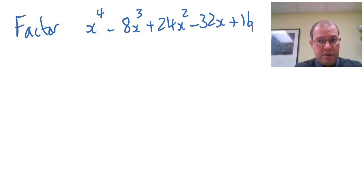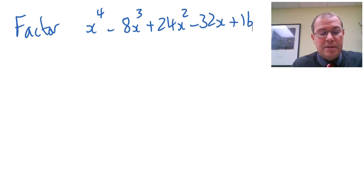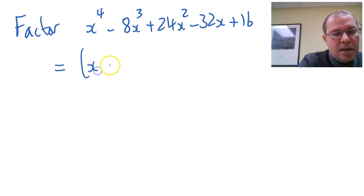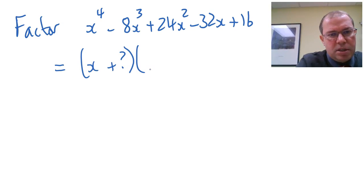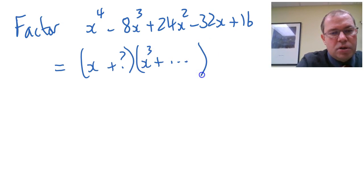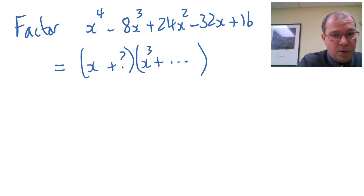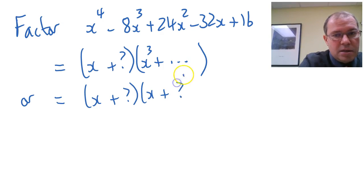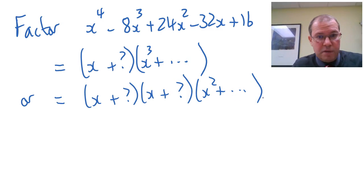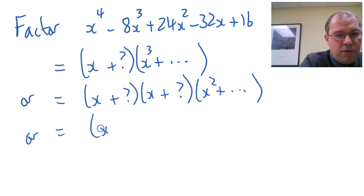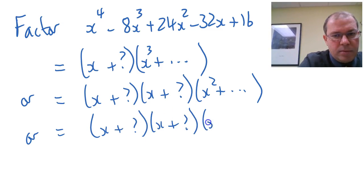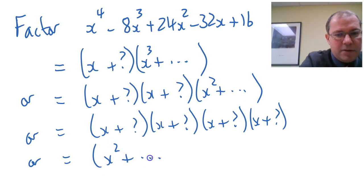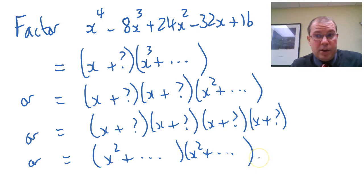So here we've got a degree 4 polynomial, and the first thing to consider is what are the possible factors. If this did factor, what could it factor to? Here are some possibilities: it could have one linear factor, so x plus something, and then the quotient would be a cubic of some sort. It could have a linear factor and a cubic that does not factor, or it could have two linear factors, with that resulting in a quadratic that does not factor. Or it could have four linear factors. Or the final possibility is it could factor into two quadratics, and the quadratics don't factor.